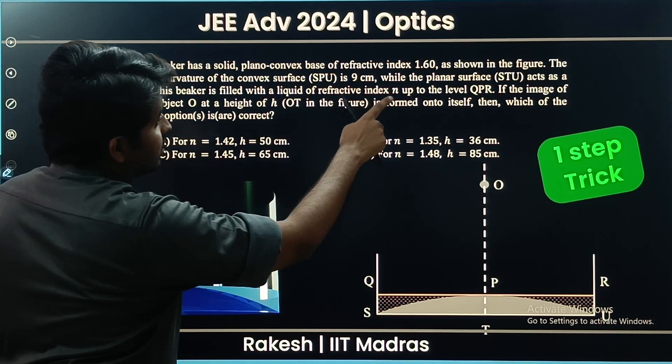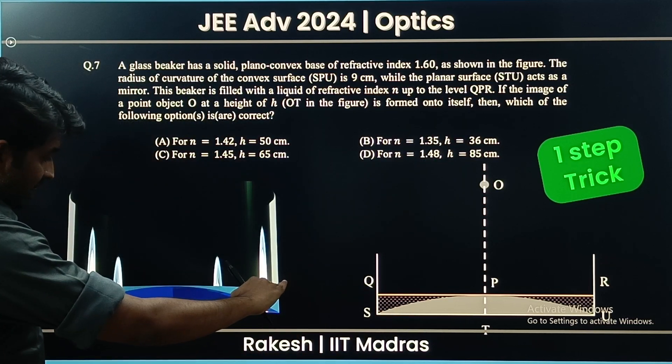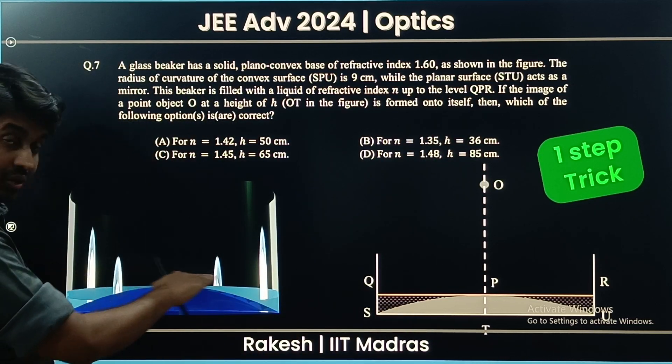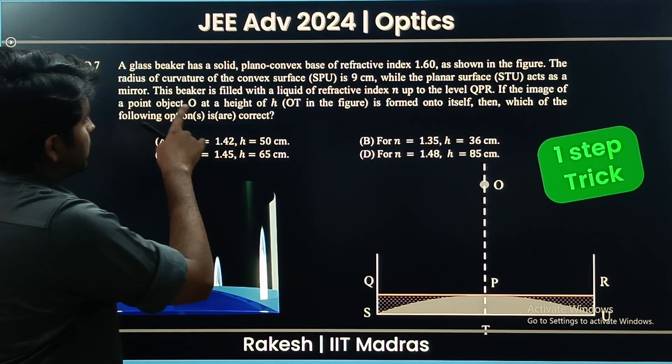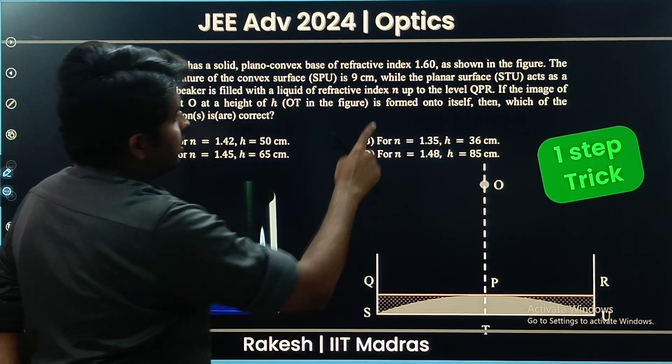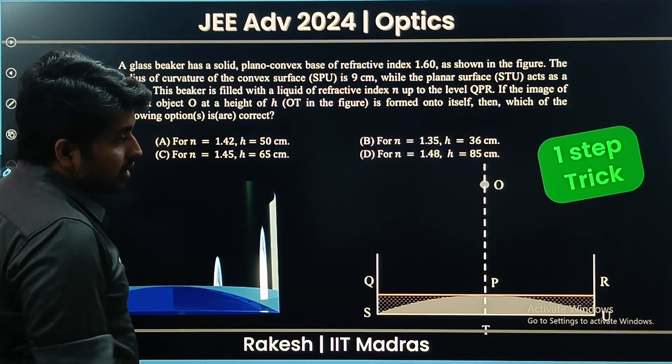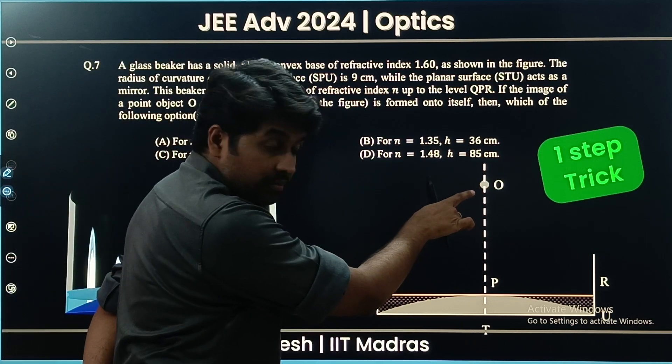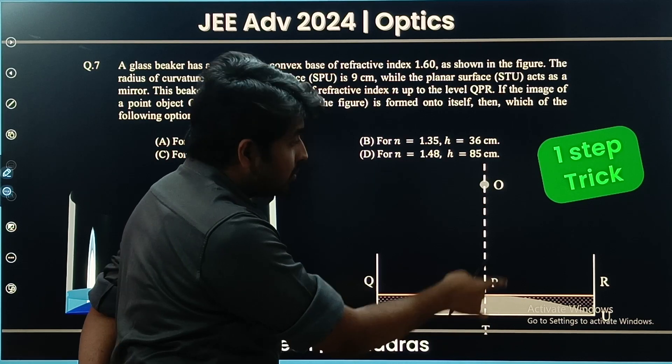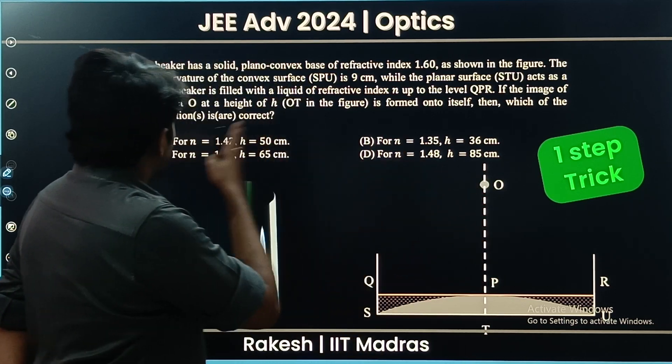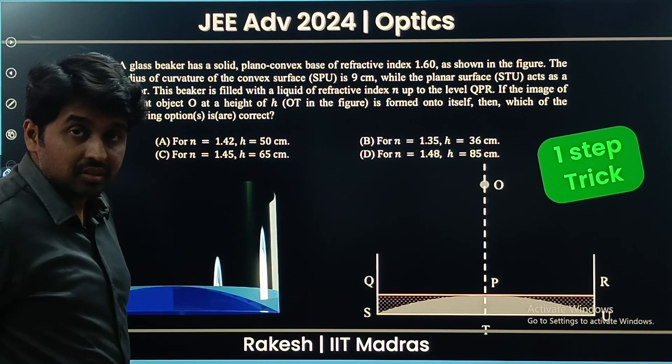This beaker is filled with a liquid of refractive index n up to a certain level. There is a liquid filled in this vessel. If the image of the point object O at height h is formed onto itself, then which of the following options is or are correct? If I keep an object here and after refraction and reflection the image is formed on itself, we are given the values of n and h and we need to see which option is correct.